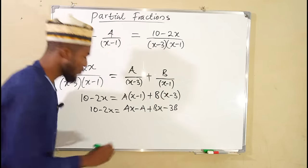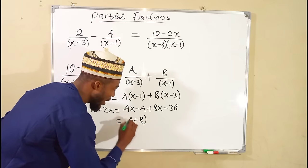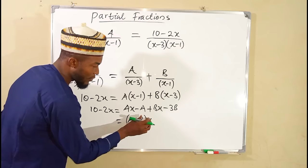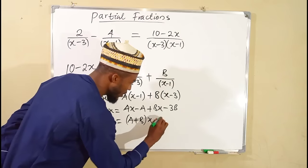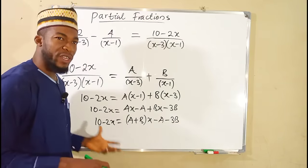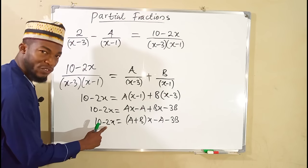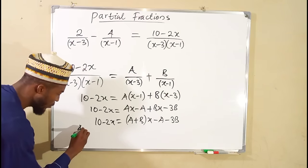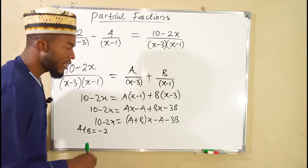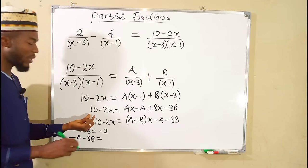Collecting terms with x together: we have (A plus B)x, and the constant terms are negative A minus 3B. This equals 10 minus 2x. Equating coefficients of x: A plus B equals negative 2. Equating constant terms: negative A minus 3B equals 10.